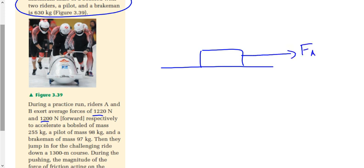Rider A is pushing with a force of 1,220 newtons, and rider B is pushing with a force of 1,200 newtons. Now, it doesn't really matter where I label those forces, as long as I label them in the right direction and as long as I label them more or less the right length. What do we got here? We've got a mass of 255, 98, 97.